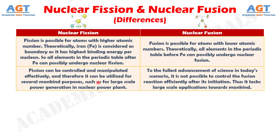Number eight: fission can be controlled and manipulated effectively, and therefore it can be utilized for several mankind purposes, such as large-scale power generation in nuclear power plants. Whereas, with the current advancement of science, it is not possible to control the fusion reaction efficiently after its initiation, and thus it lacks large-scale applications towards mankind.